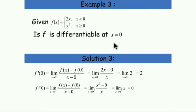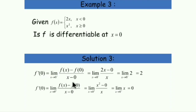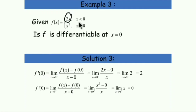To check this, we have to check the limit from the left and from the right using the derivative limit formula. Let's check the limit from the left first. We take the limit as x approaches 0 from the left, and since we are in the domain x less than 0, we use the function 2x.